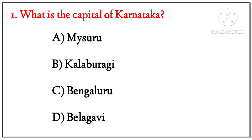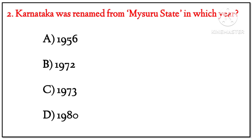Now we will take a few MCQ questions. Question 1: What is the capital of Karnataka? The correct option is C — Bengaluru. Question 2: Karnataka was renamed from Mysuru State in which year? The correct option is C — 1973.